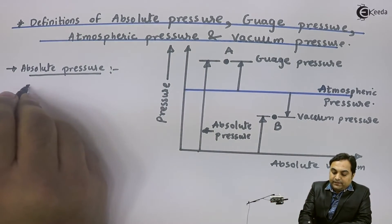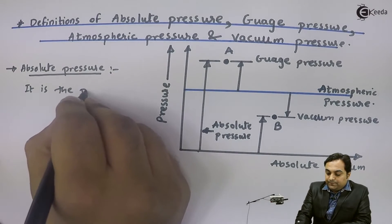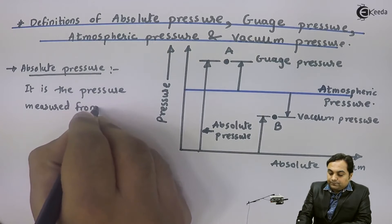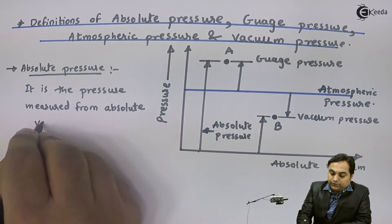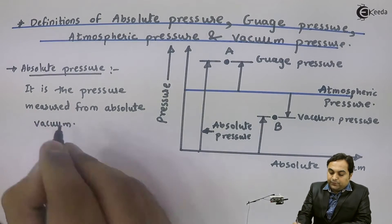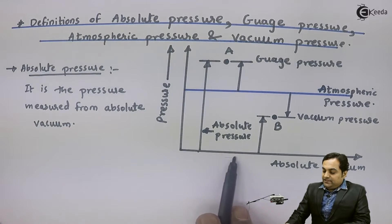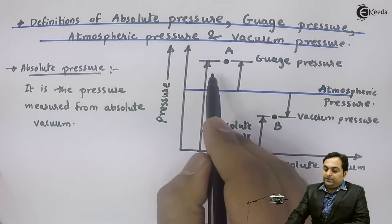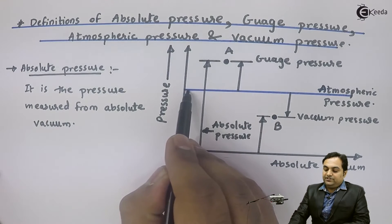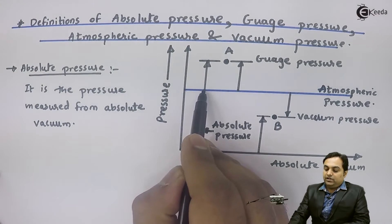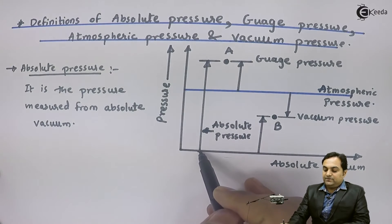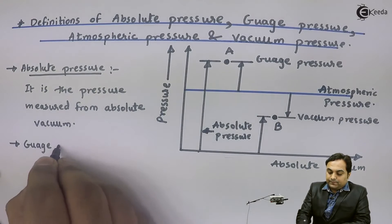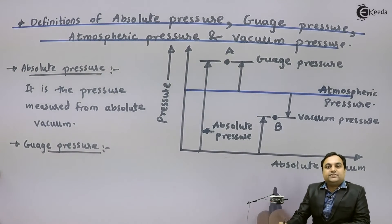Absolute pressure is the pressure measured from absolute vacuum. Absolute vacuum means zero — the pressure value is zero — and from that, if we are measuring the pressure up to a point above atmospheric, that is called absolute pressure. The atmospheric pressure is indicated by the blue line, so if the pressure goes above the blue line and we measure it with respect to absolute vacuum, that is called absolute pressure.